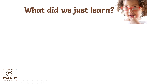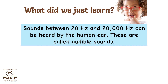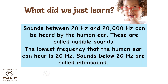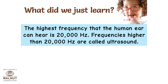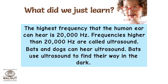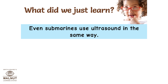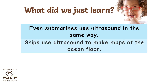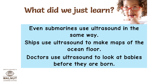What did we just learn? Sounds between 20 hertz and 20,000 hertz can be heard by the human ear — these are called audible sounds. The lowest frequency the human ear can hear is 20 hertz; sounds below 20 hertz are called infrasound. The highest frequency the human ear can hear is 20,000 hertz; frequencies higher than 20,000 hertz are called ultrasound. Bats and dogs can hear ultrasound — bats use ultrasound to find their way in the dark, and even submarines use ultrasound in the same way. Ships use ultrasound to make maps of the ocean floor, and doctors use ultrasound to look at babies before they are born.